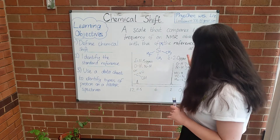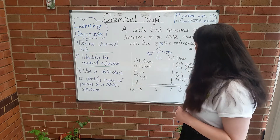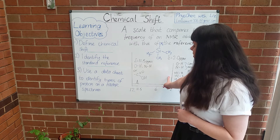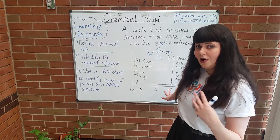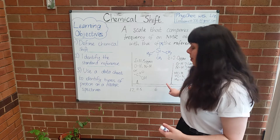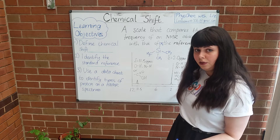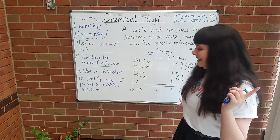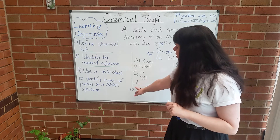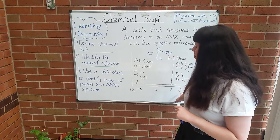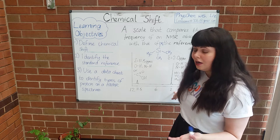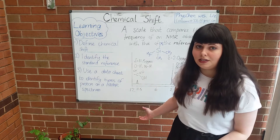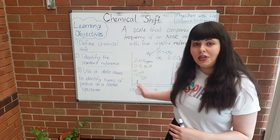So this scale in parts per million — what does that actually mean? If we have a signal at two parts per million, that means those protons required two millionths of the magnetic field needed to produce that signal compared with TMS, whose signal appears at zero. Another thing to notice about this NMR spectrum is that the bigger numbers are on the left-hand side and the smaller numbers are on the right-hand side. A proton NMR spectrum is usually from 0 to 15 ppm.